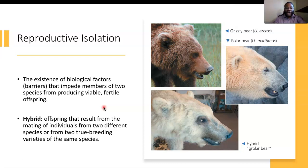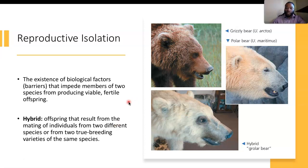We do know that there is a hybrid, in which offspring result from the mating of individuals from two different species, or from true breeding of varieties of the same species. For example, polar bears and grizzly bears are able to mate and create a hybrid — the grolar bear — which is a hybridization resulting from this reproductive isolation that occurs between species.